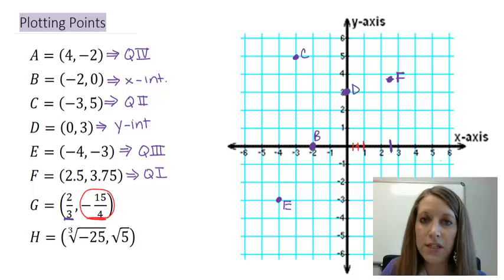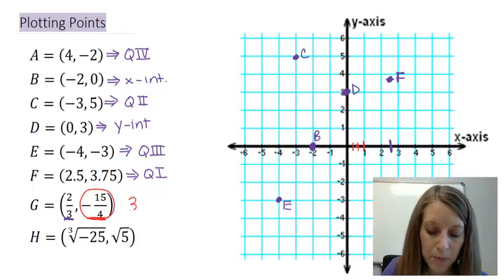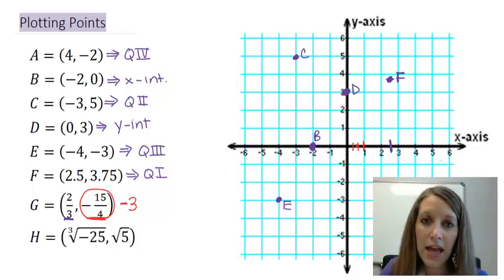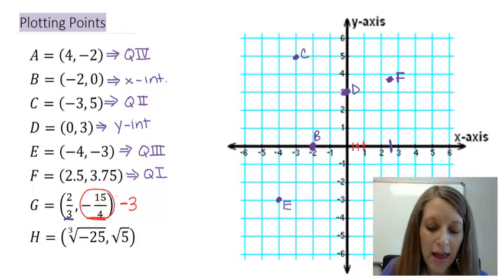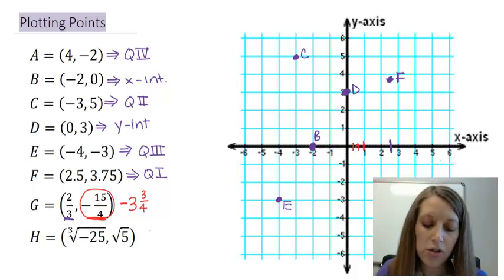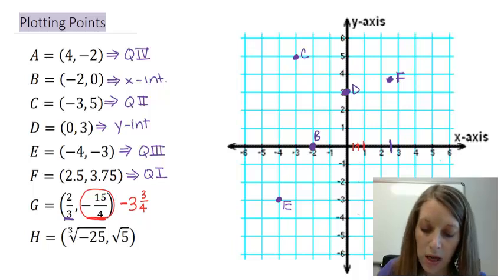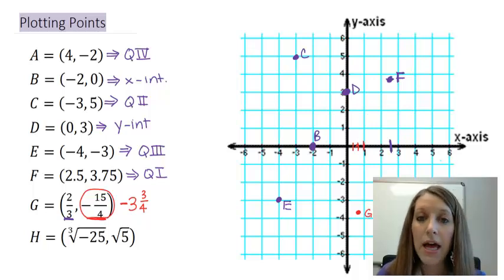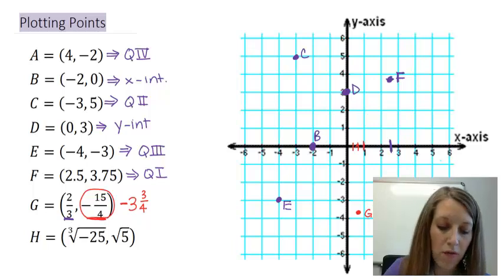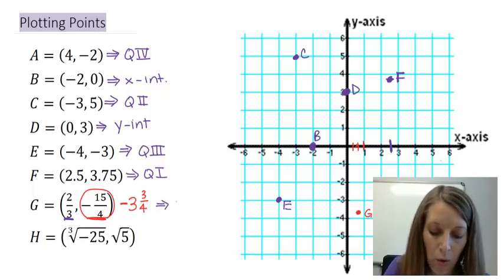So let me first convert it to a mixed fraction. 4 goes into 15 evenly three times. And if I take out those three times of 4, meaning taking out 12, I see that I have three of them left over. So -15/4 converted to a mixed fraction is -3 and 3/4 units. So to plot point G, I would count right 2/3 and down 3 and 3/4 units, which would put me about right here. I can see that's in the bottom right quadrant, so of course that puts me in quadrant 4.